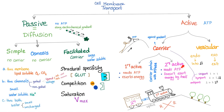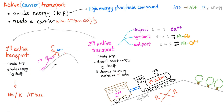We call it secondary because it's secondary to the primary. Examples of primary active transport: the sodium-potassium ATPase, the hydrogen ATPase, the calcium ATPase, and the hydrogen-potassium ATPase — which occurs in the kidney and also in the stomach, which is what we call the proton pump, targeted by proton pump inhibitors such as the famous omeprazole.